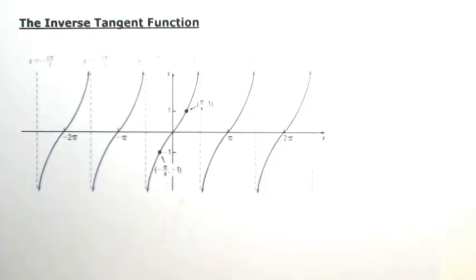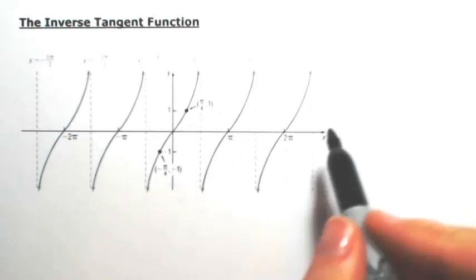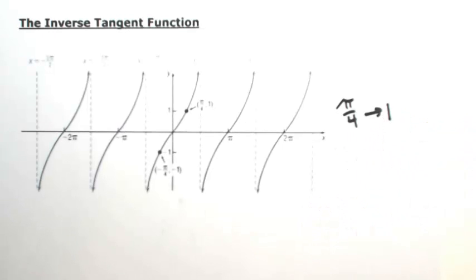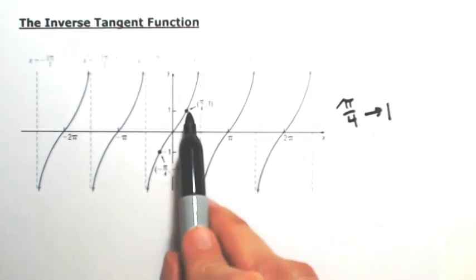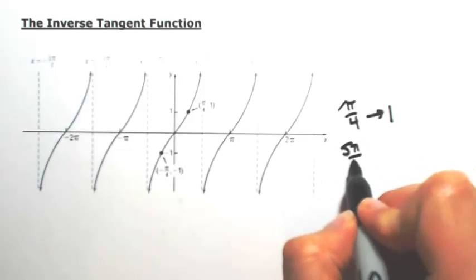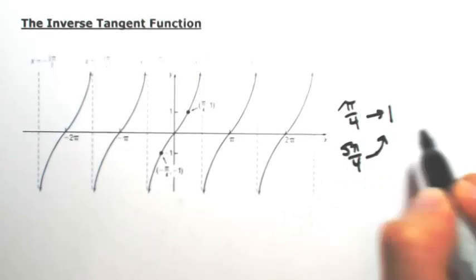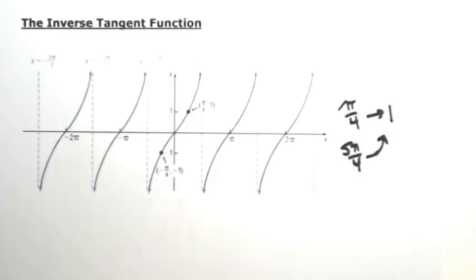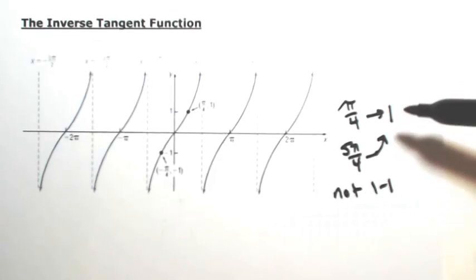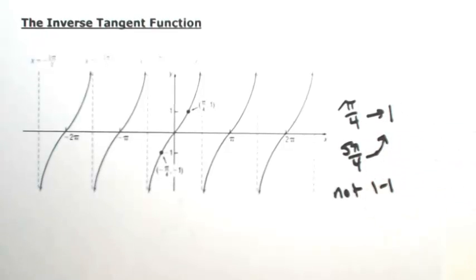Here we have many cycles of the tangent function. Because it is a function, one input gives us one output. For example, π/4 would give us 1. But there are many other places where the input also gives us 1 — for instance, 5π/4. So the tangent of 5π/4 also gives us 1. While it is a function, it is not a 1-to-1 function, because that output of 1 gives us back two different input values.